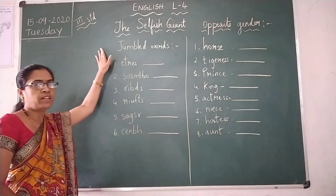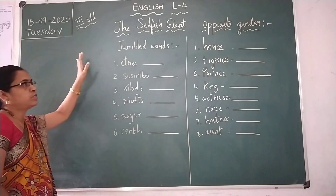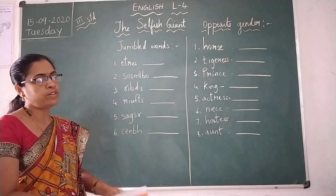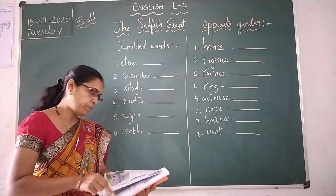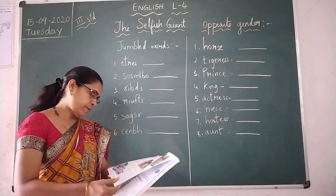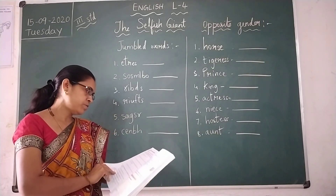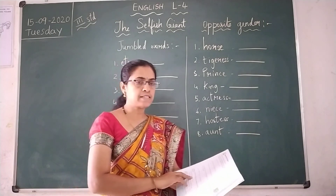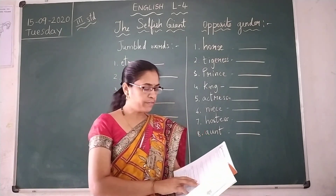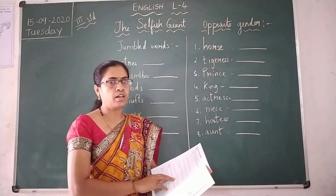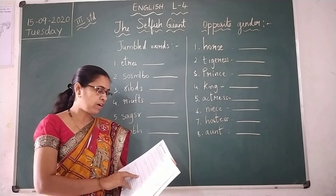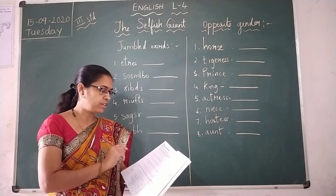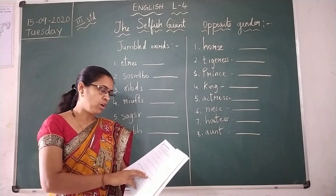So we already know the story. Let us discuss today the exercise from your textbook. Open page number 42. Based on your understanding of the story, state whether the following are right or wrong. You have to tick whether each statement is right or wrong.